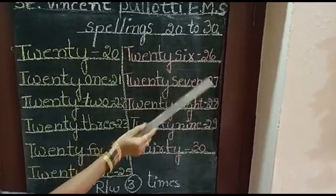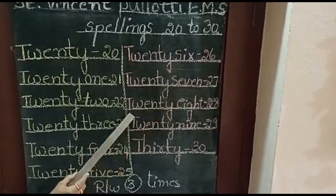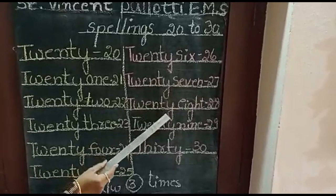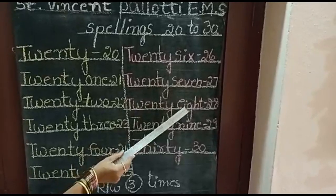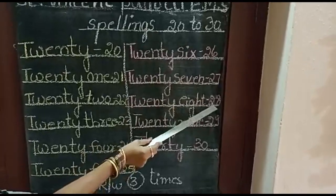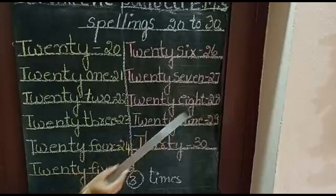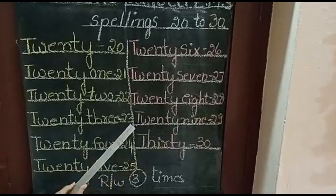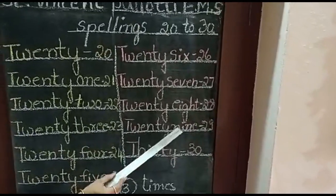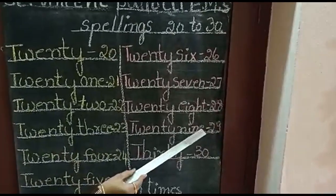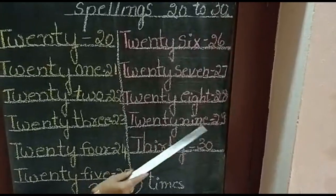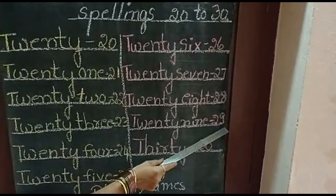T-W-E-N-T-Y S-E-V-E-N. 27. T-W-E-N-T-Y E-I-G-H-T. 28. T-W-E-N-T-Y N-I-N-E, 9. 29.